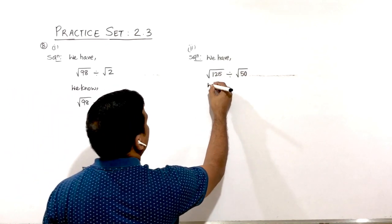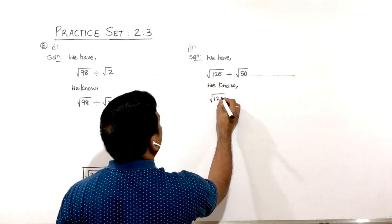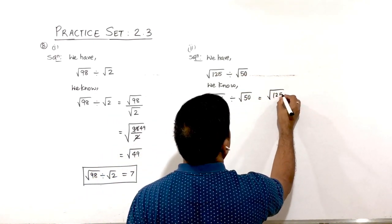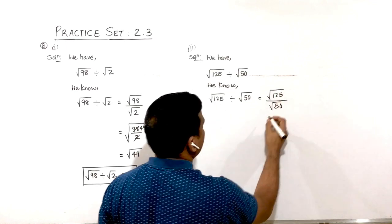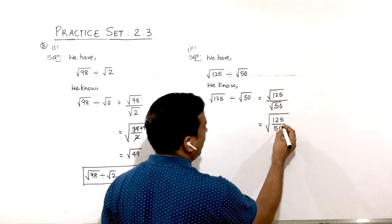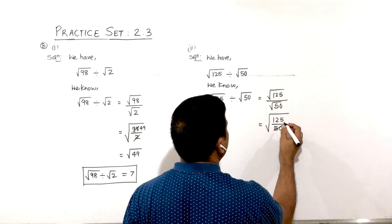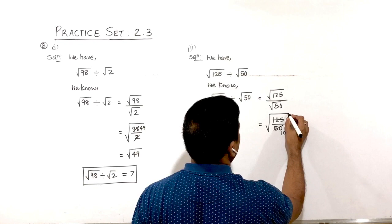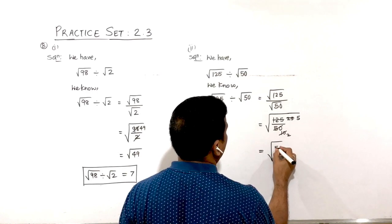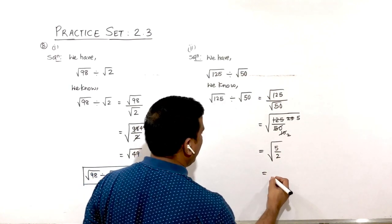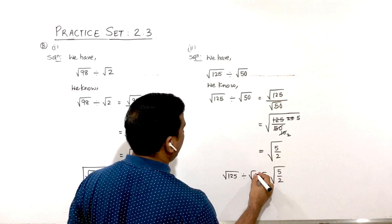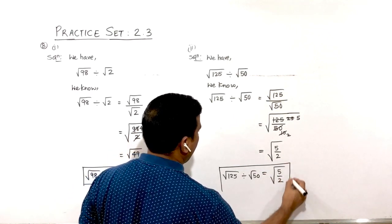The second division: √125 ÷ √50 = √(125/50). Both are factors of 5, so simplifying 125/50 gives 5/2. Therefore the answer is √(5/2), meaning √125 ÷ √50 = √(5/2).